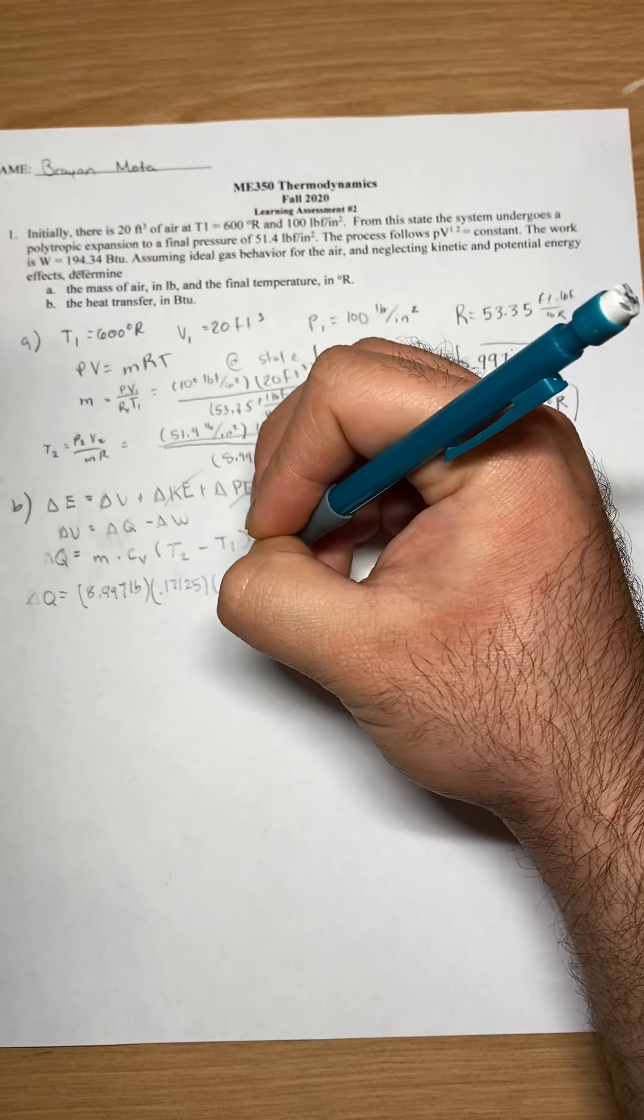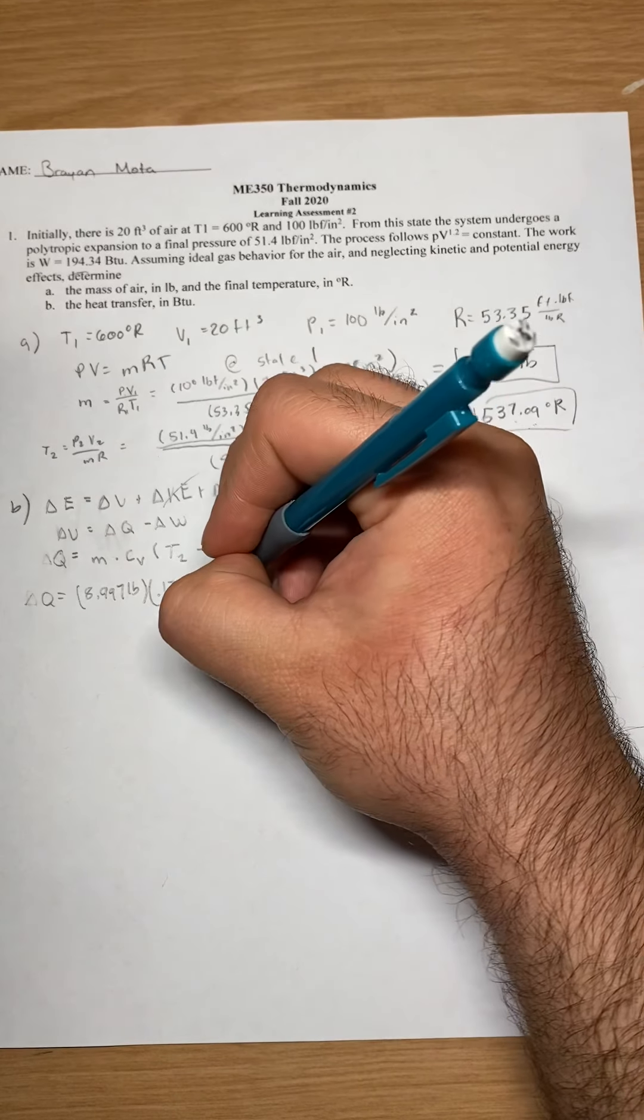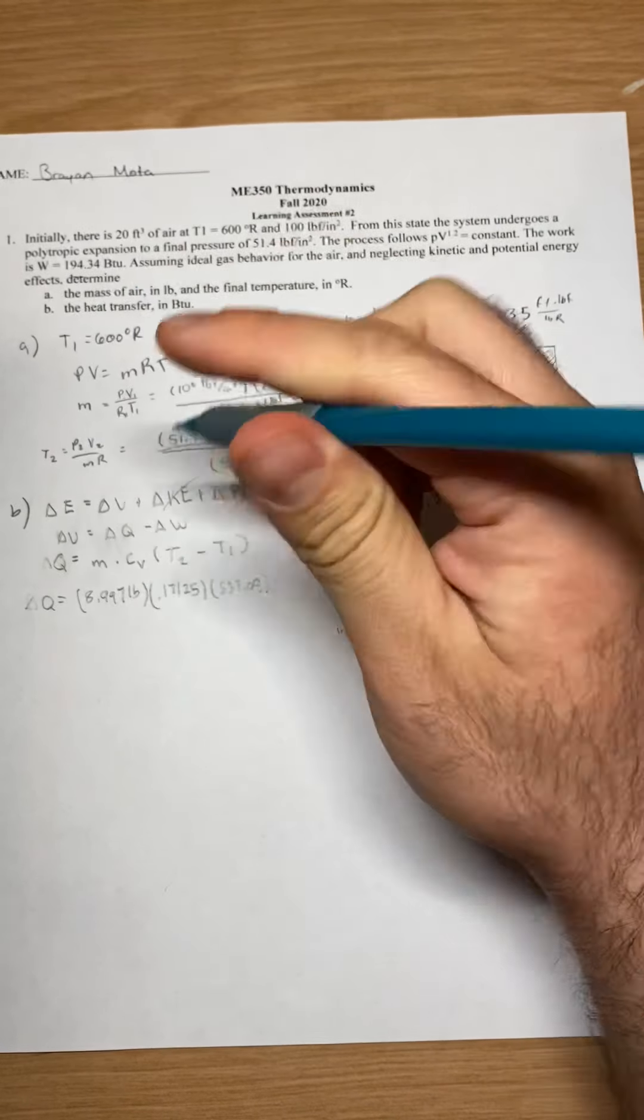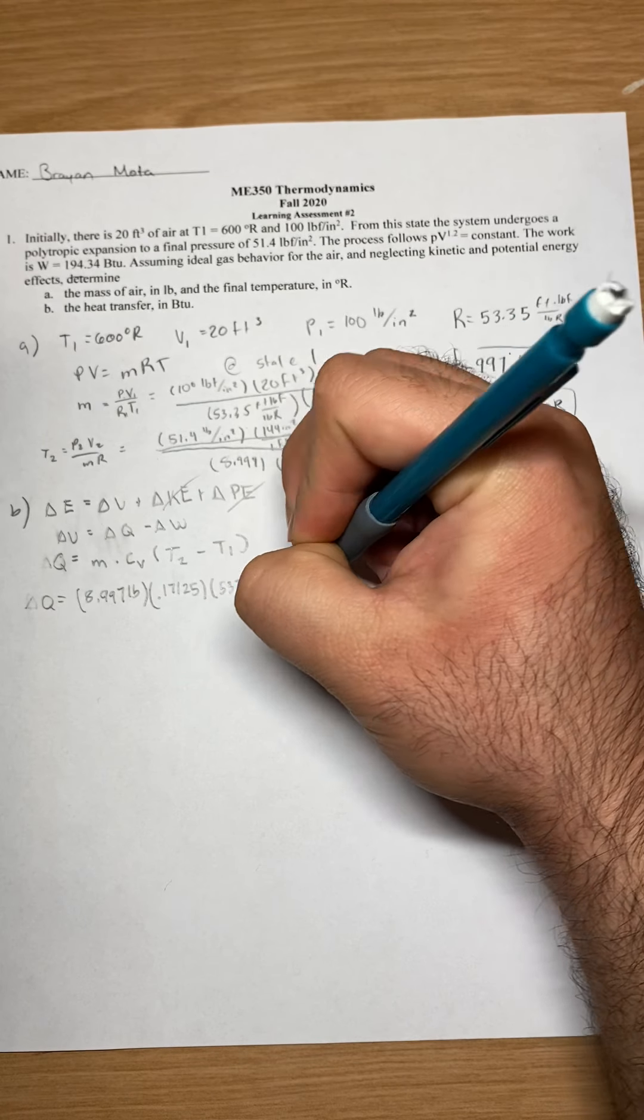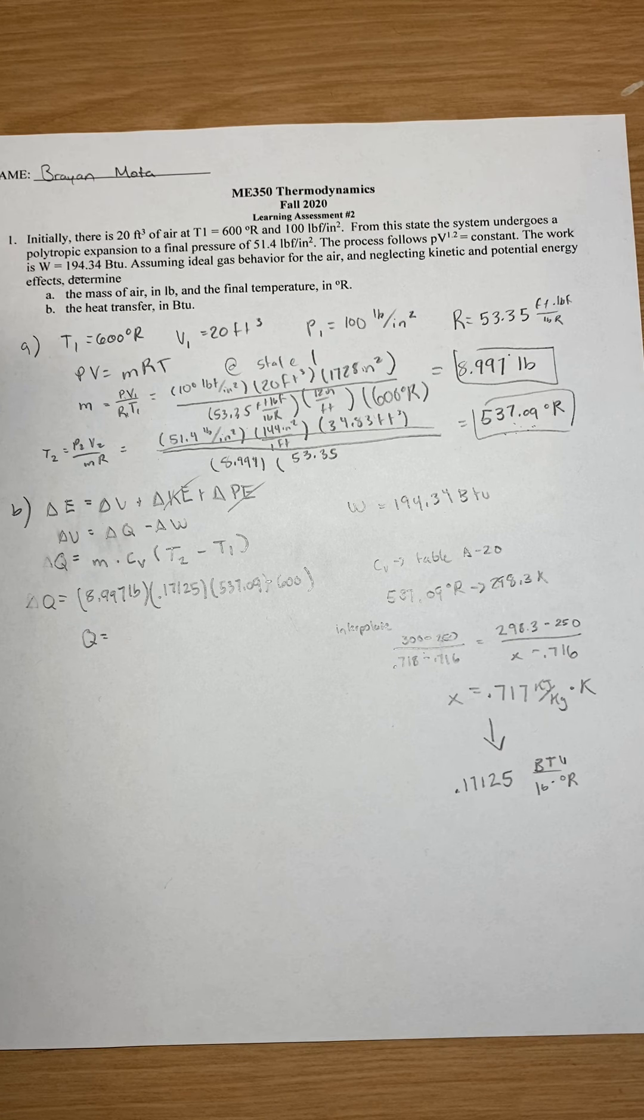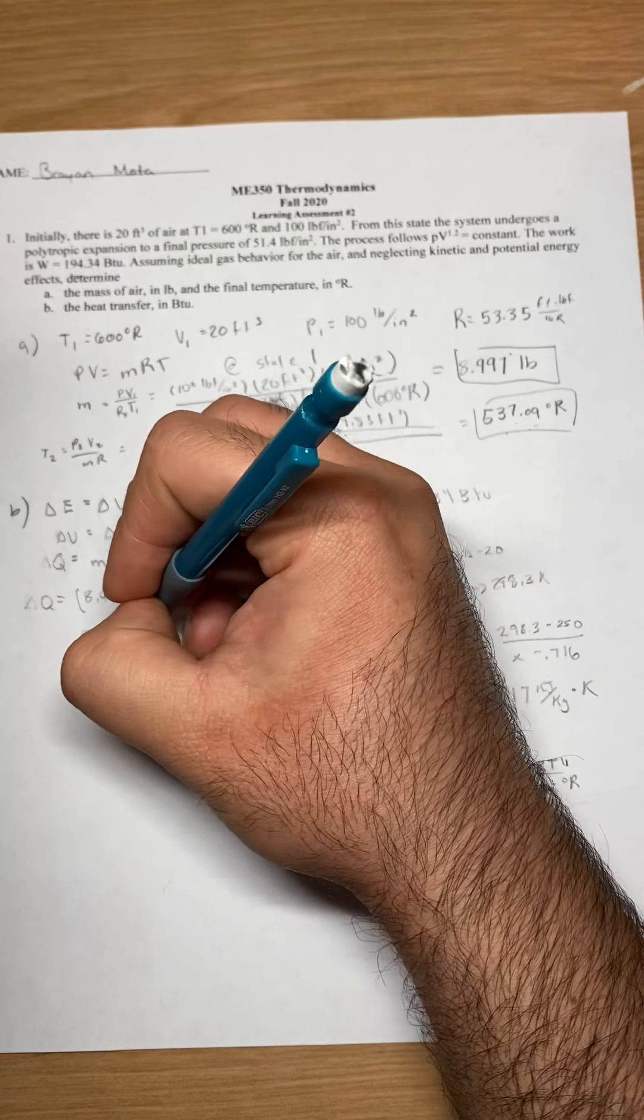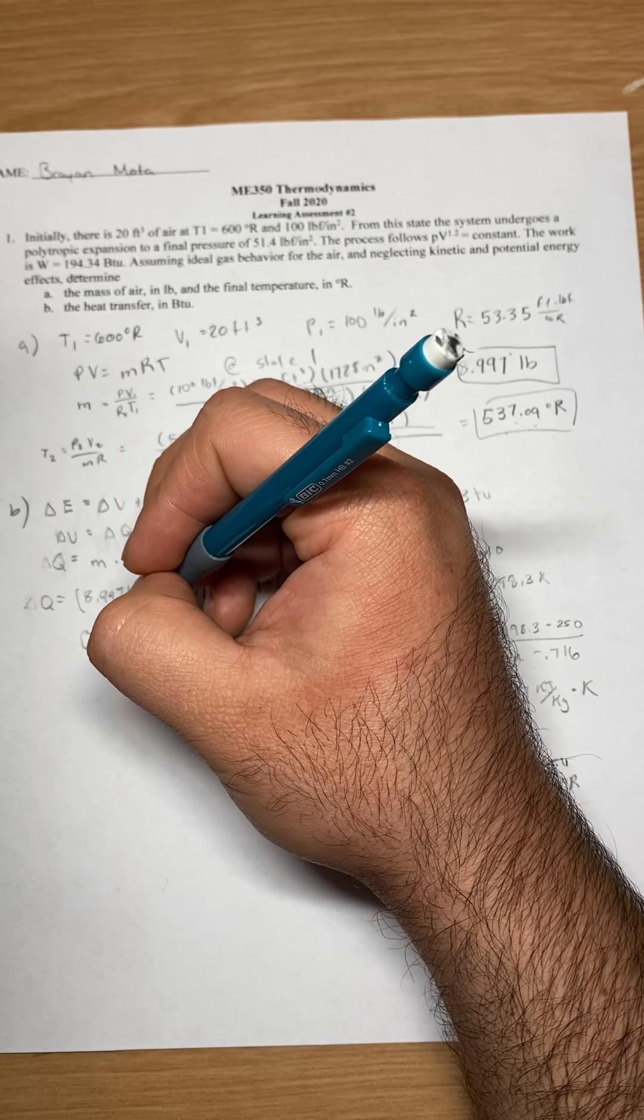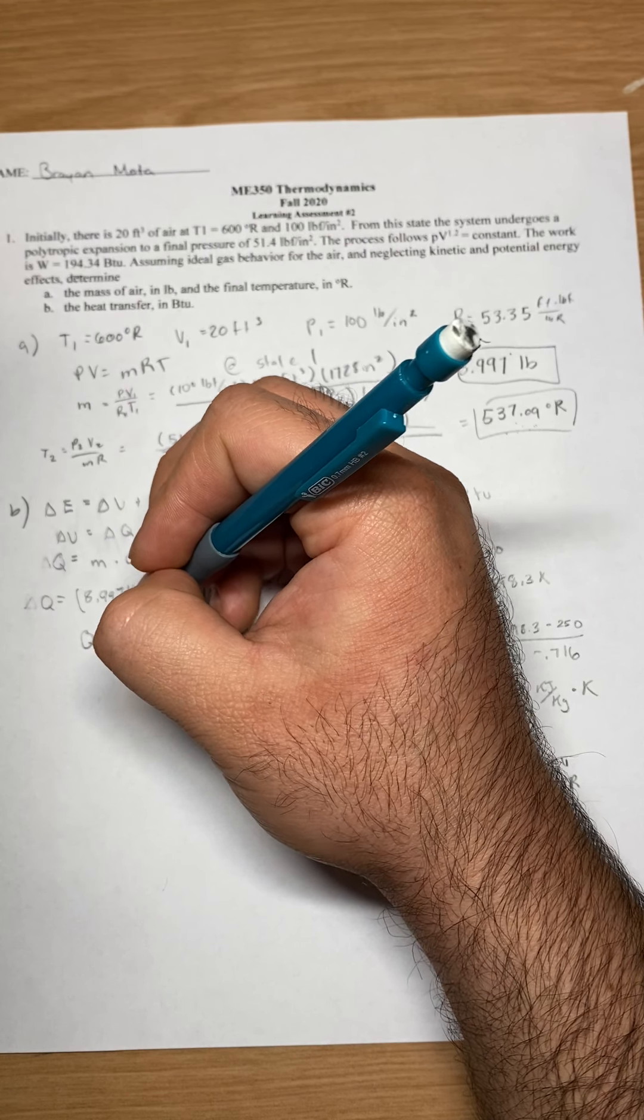And then my temperature second is 537.09 minus our first is 600 Rankins. So my Q, if you plug that in the calculator...